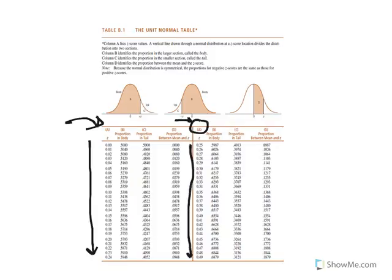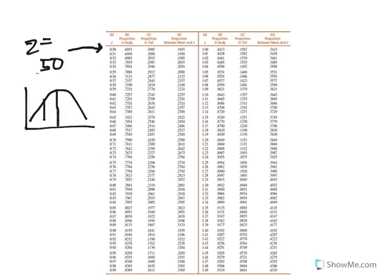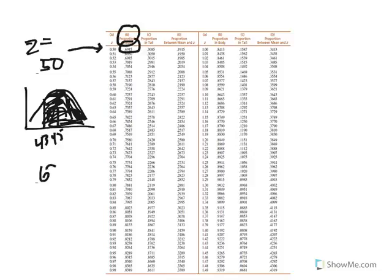Scanning down column A, I don't see 0.5 on the first page, so I go to the next page. At the very top I see z equal to 0.50. Based on my sketch — with the mean of 45 and score of 43, recognizing that's the body of the distribution — the column I'm interested in is column B, proportion in the body. The value displayed is 0.6915.